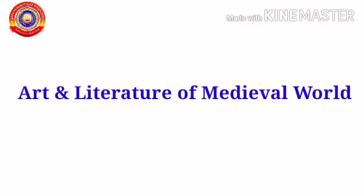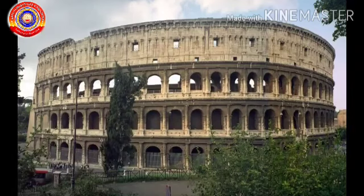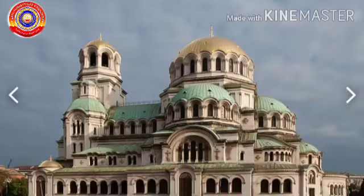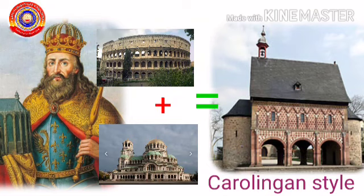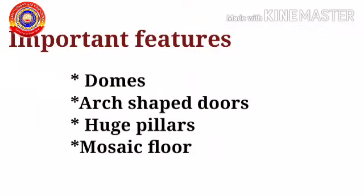Art and literature of the medieval world. Let's see some pictures. This first style is ancient Roman style. The next picture shows Byzantine style. Emperor Charlemagne combined these two styles to form a new style called the Carolingian style.